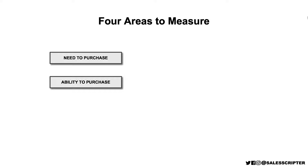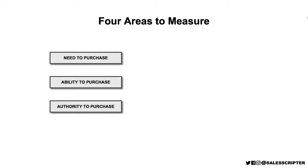Does the prospect have the ability to purchase what you sell? This basically refers to whether the prospect has money to buy your product. You could be talking to a prospect who needs and loves your software, but at the end of the day, if they have zero funding, they do not have the ability to purchase. Does the prospect have the authority to purchase? The prospect may need your software and there may be funding, but is the prospect you're dealing with the decision maker?